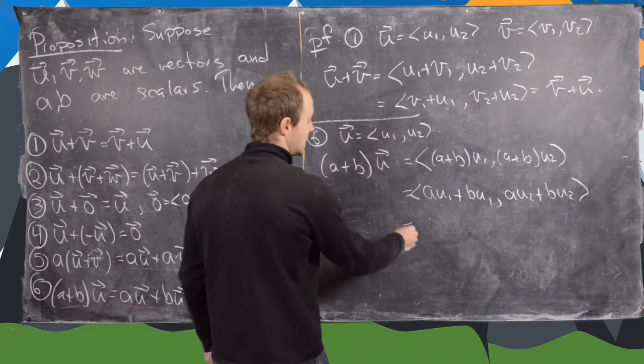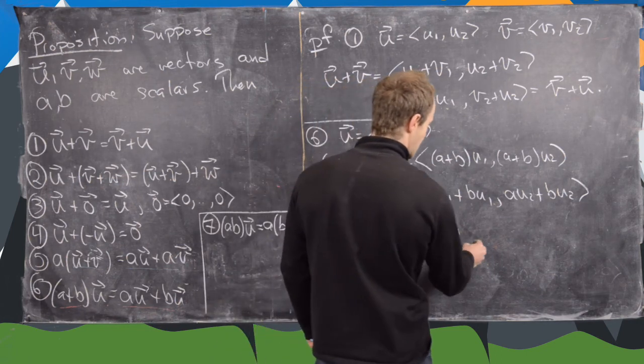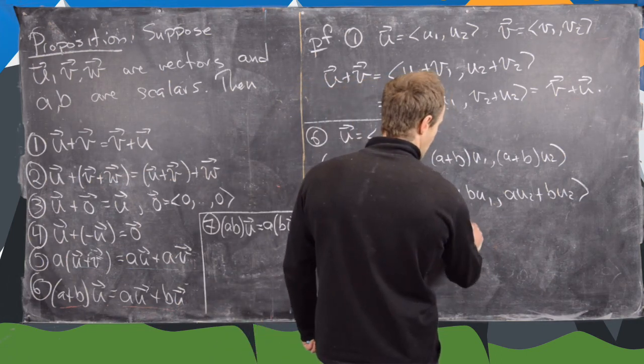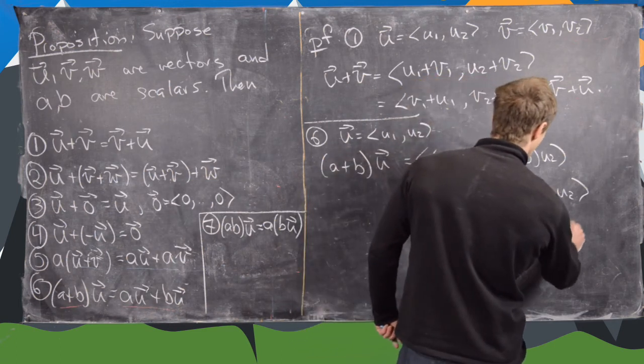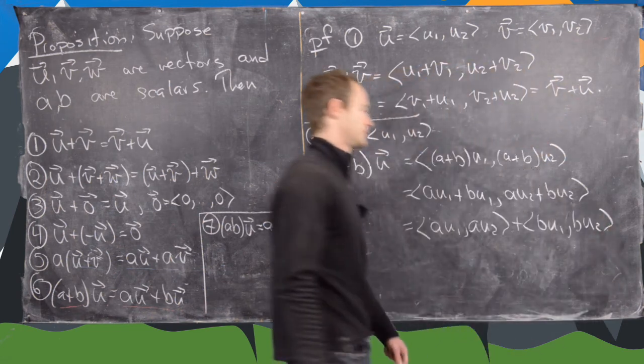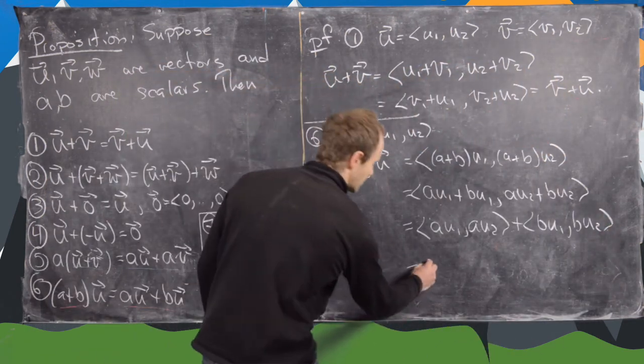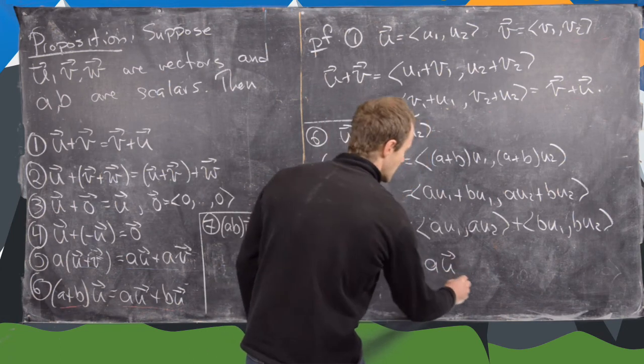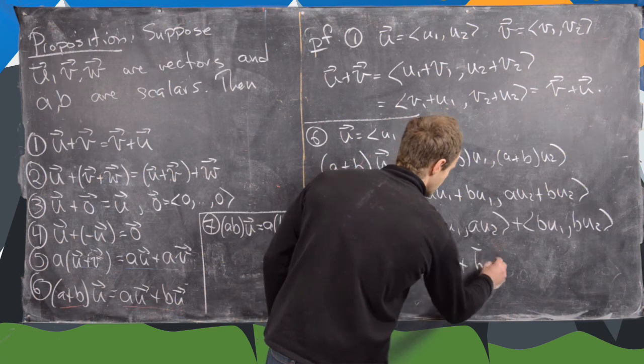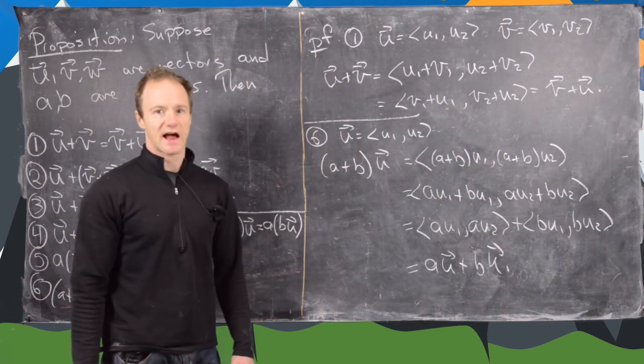And now we can use vector addition to pull these apart. So that's (au1, au2) plus (bu1, bu2). But then again, that's exactly the definition of scalar multiplication of a with u plus b with u. Which is exactly what we wanted.